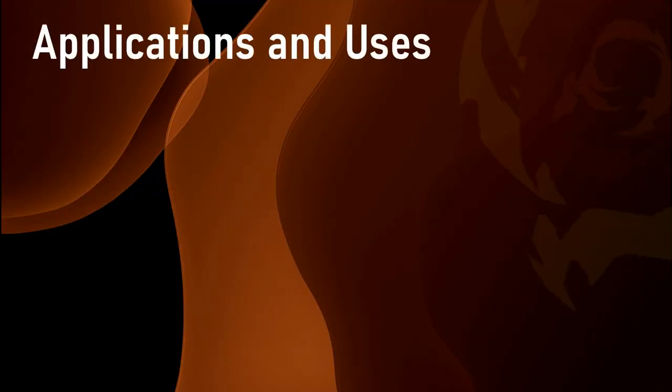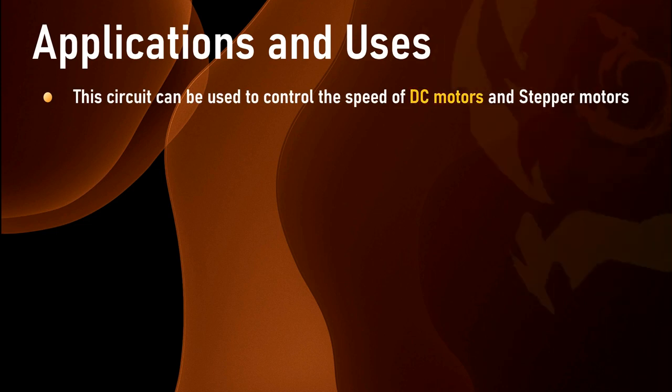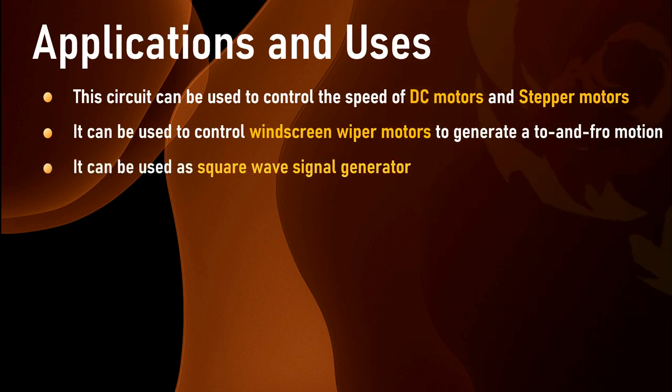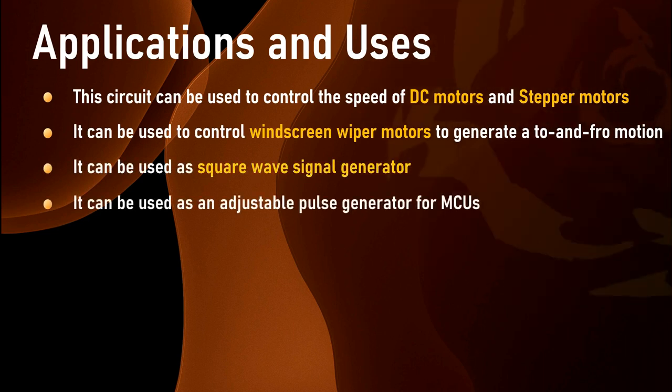This circuit can be used to control the speed of DC motors and stepper motors. It can be used to control the windscreen wiper motor to generate the to-and-fro motion. It can be used as a square wave signal generator. It can be used as an adjustable pulse generator for MCUs.